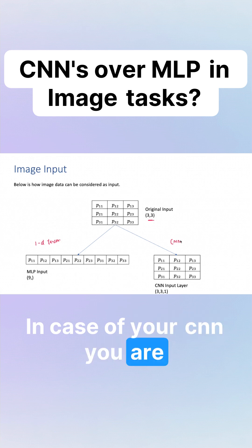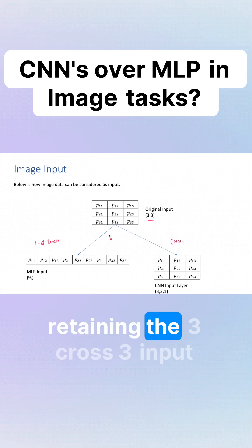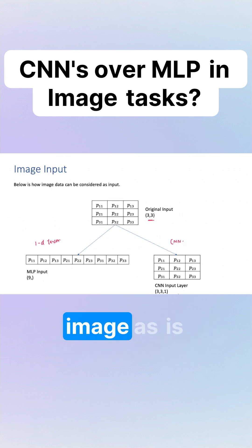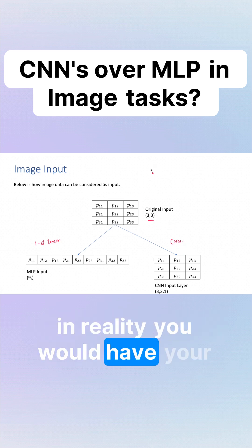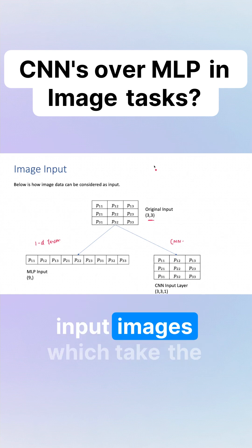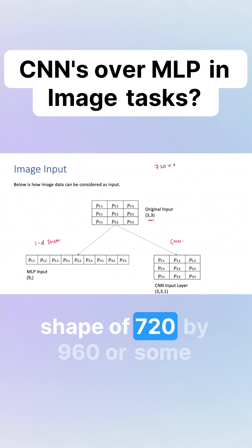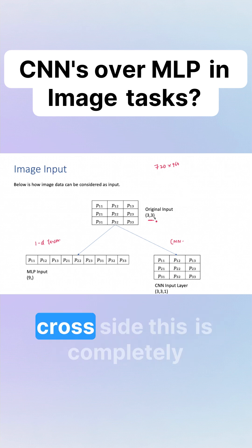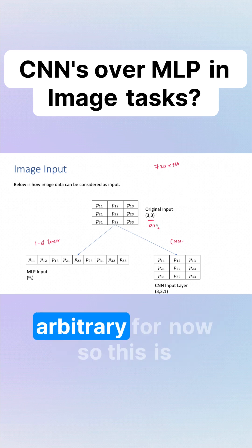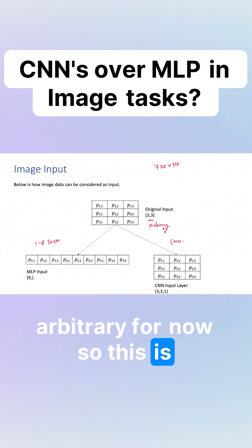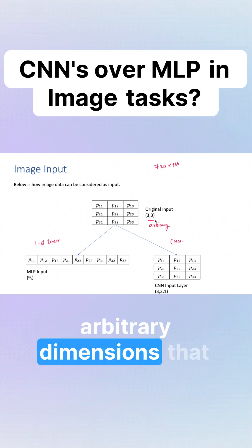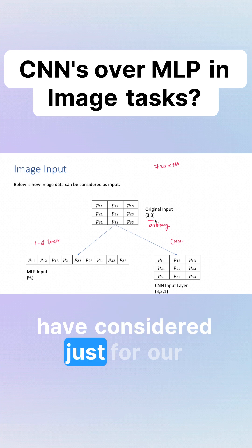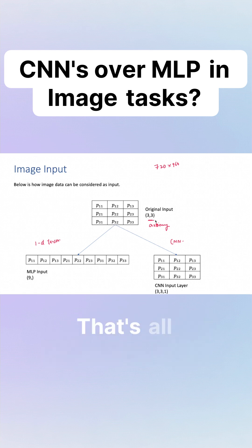In the case of your CNN, you are retaining the 3x3 input image as-is. In reality, you would have your input images which take the shape of 720x960 or some other dimensions, but not 3x3. This is completely arbitrary — we have considered these arbitrary dimensions just for our better understanding.